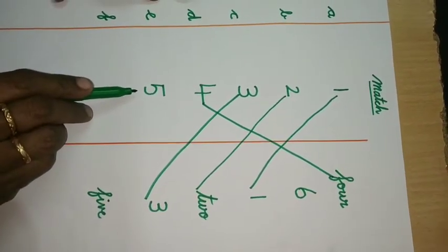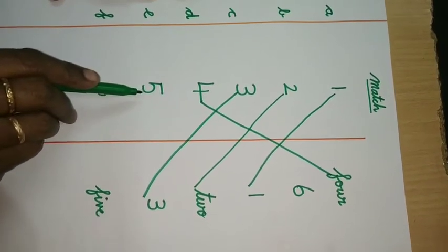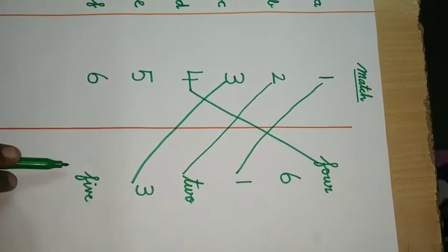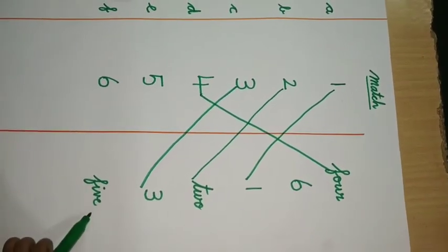5. Where is 5? Here. What is the spelling of 5? F, I, V, E. Where is F, I, V, E? Here.